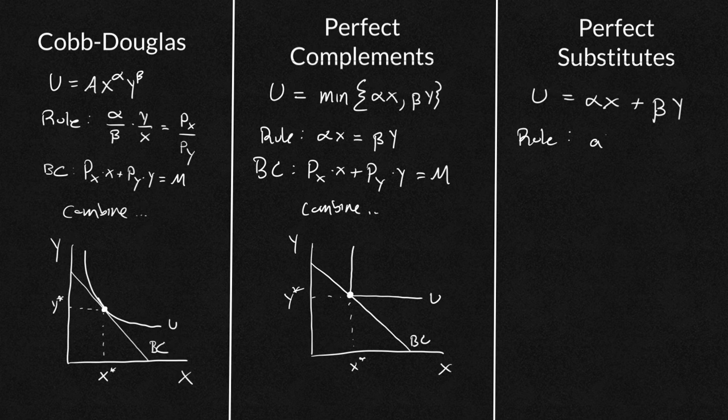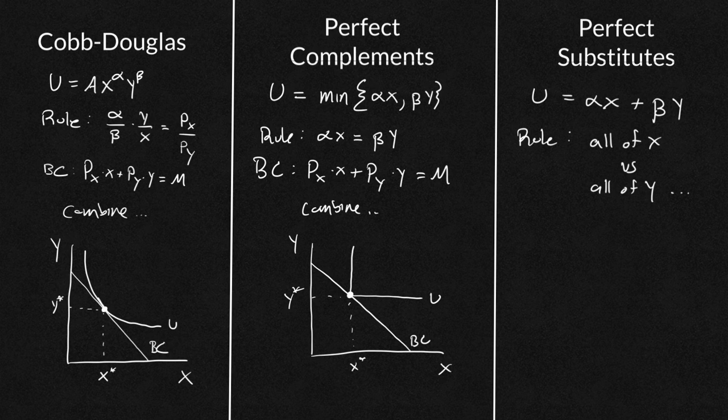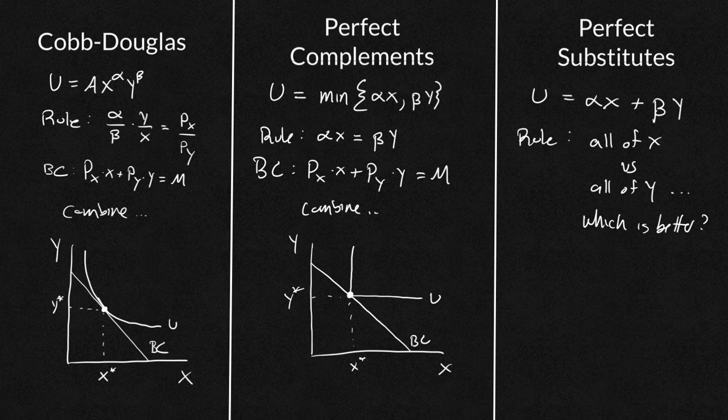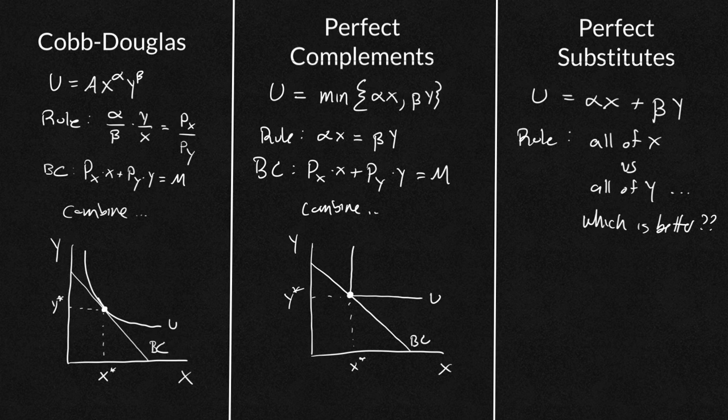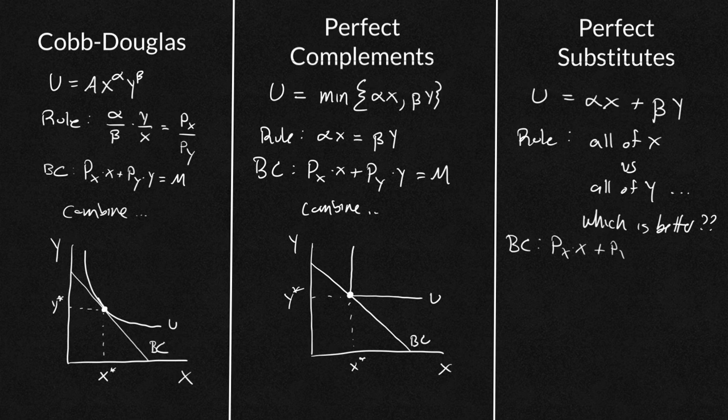The rule I care about and tell my students is you say all of X versus all of Y. And basically, which is better? What I mean by that is I'm going to spend all of my income on one of them. If they're perfect substitutes, that means I will never want to have a combination. I want to have all of one and zero of the other. Again, remember we have our budget constraint. I'm just doing this again because this helps with repetition. P Y times Y equals M.